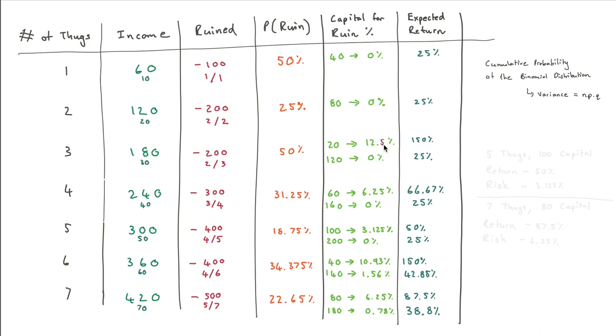But look what happens when it's three thugs, and we put just $20. Our expected return goes up to 150%. However, it's 12.5% risk that our legs get broken. And remember, our appetite is we want it to be around 5%. So 12.5% is a little bit too high. So the next step that we can go to is having to put in $120, because any other amount that we put between $20 and $120 is still going to have a 12.5% chance of ruin. $120 is the lowest amount of capital that we can put in, in order to reduce our ruin a little bit further.